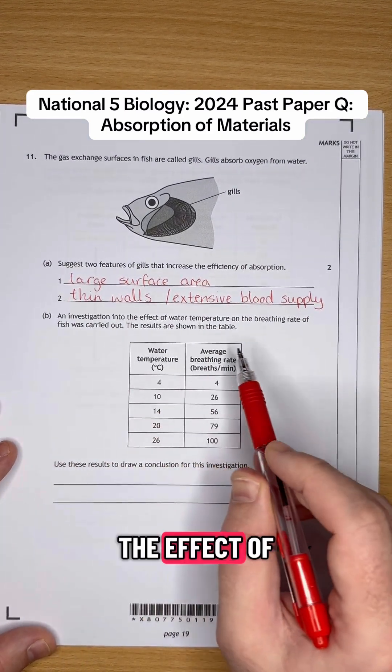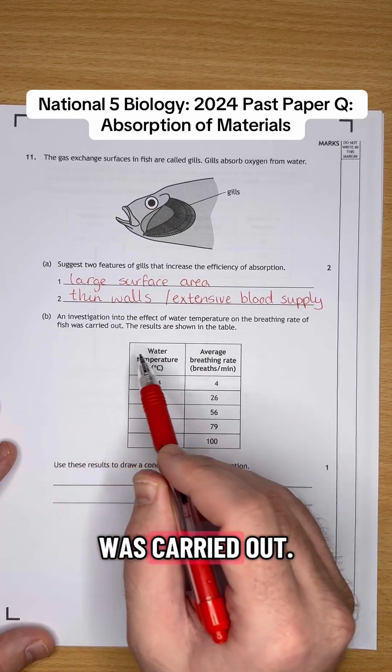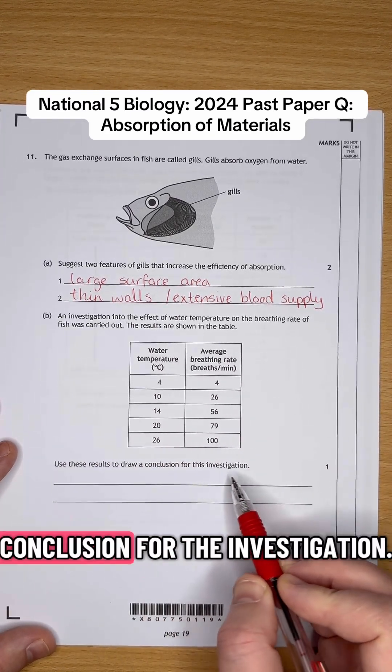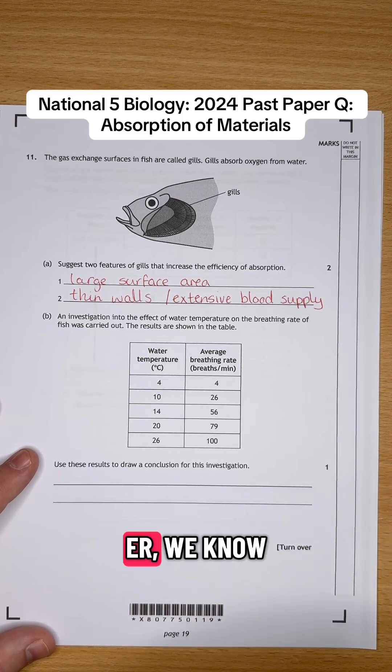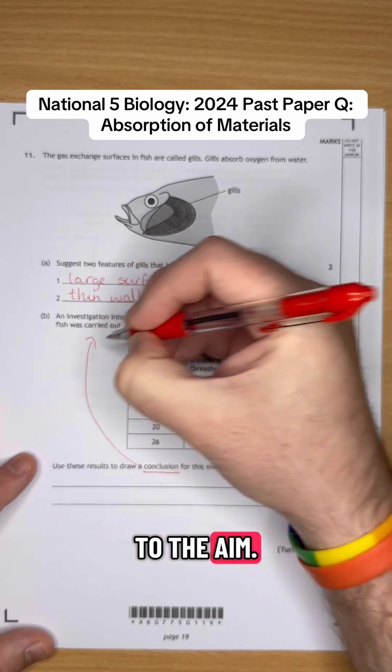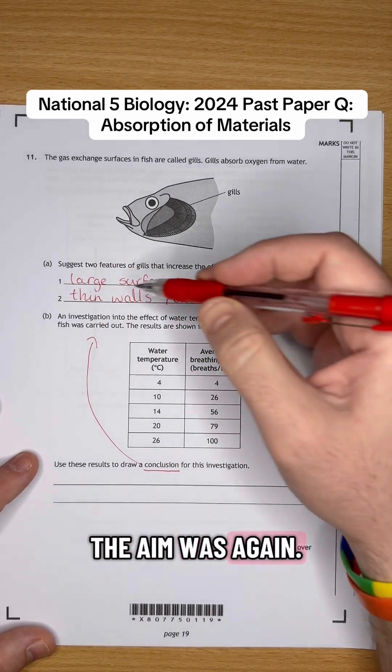It says, as an investigation into the effect of water temperature and the breathing rate of fish was carried out, the results are shown on the table. We have to use these results to draw a conclusion for the investigation. Now, we know that a conclusion always relates back to the aim, okay? So let's find out what the aim was again.